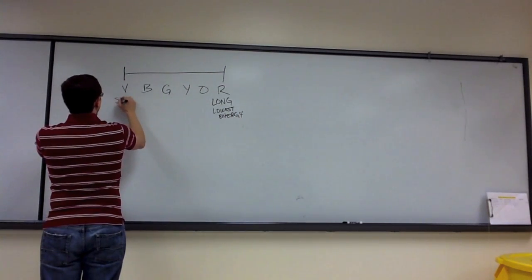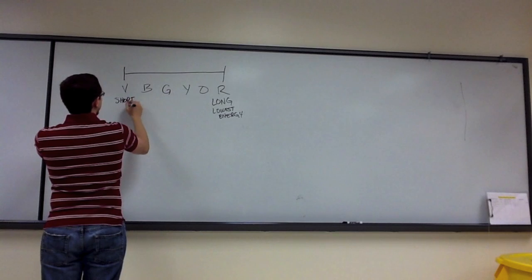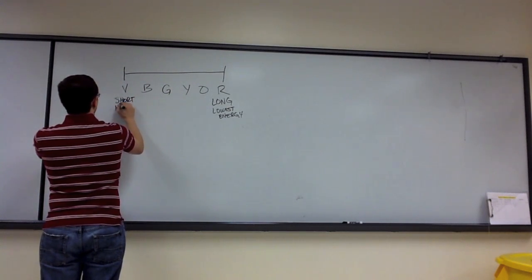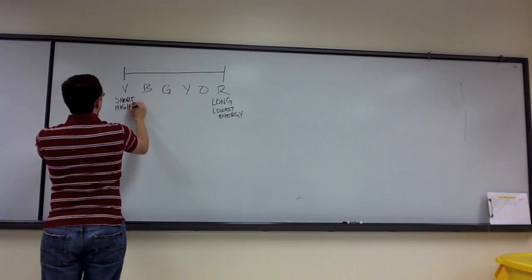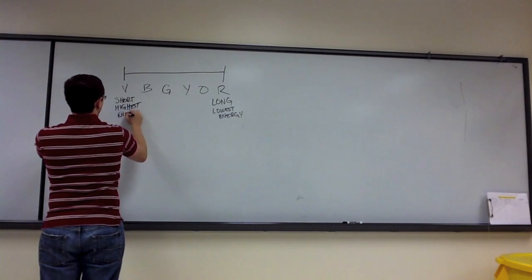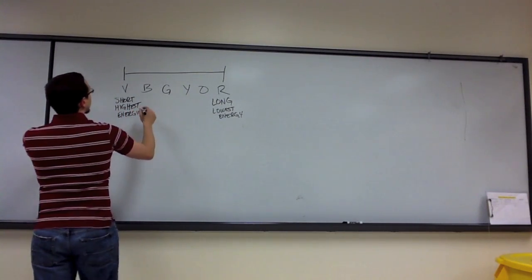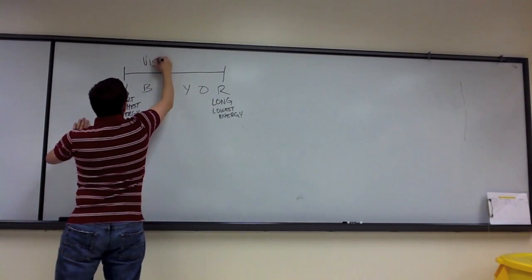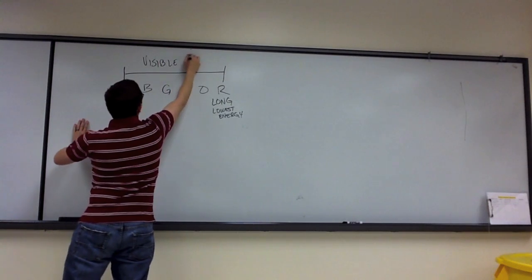Violet, on the other hand, in the visible spectrum of light, has the shortest wavelength, and it has the highest energy. So this is the visible spectrum.